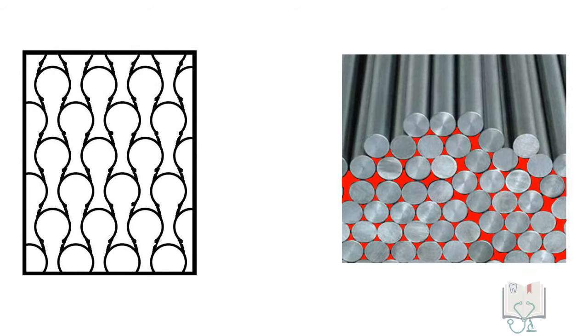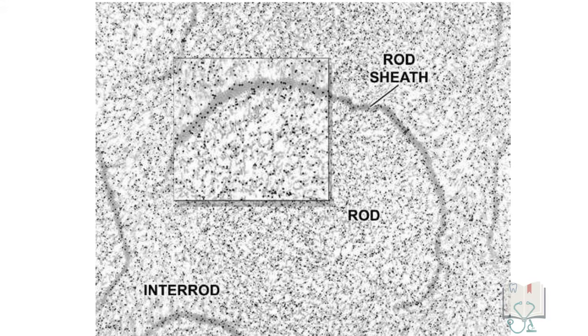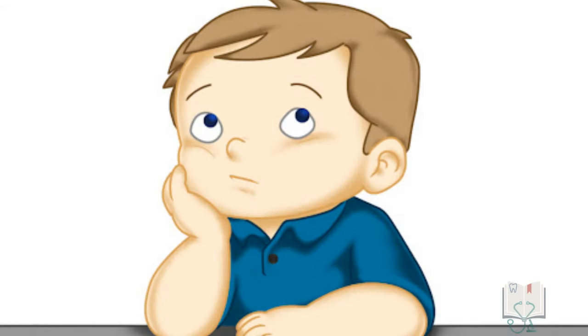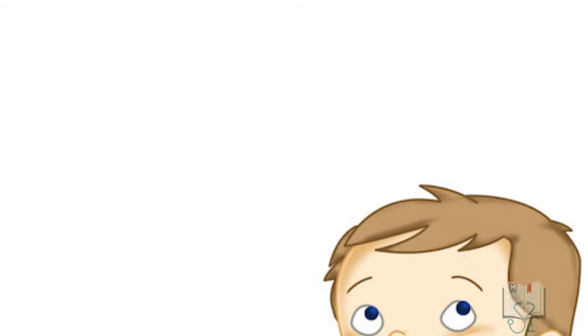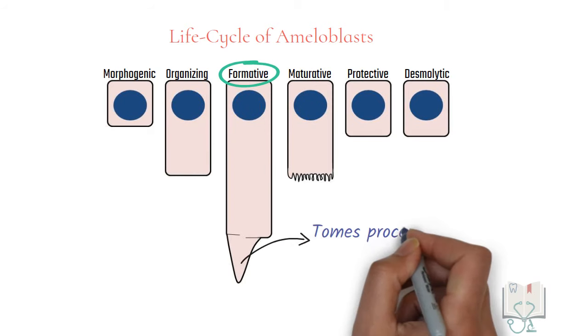Whereas the keyhole shape provides closer stacking of rods that limits the organic matter to only 4%. Now, why are rods and inter rods formed differently? The reason lies in the ameloblasts. In the life cycle of ameloblasts during the formation of enamel, the ameloblasts have an extension called the tomes process.